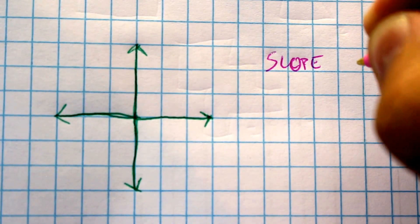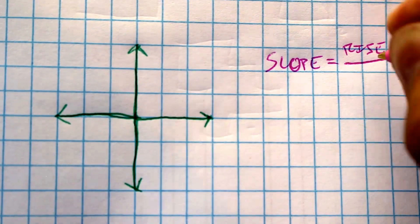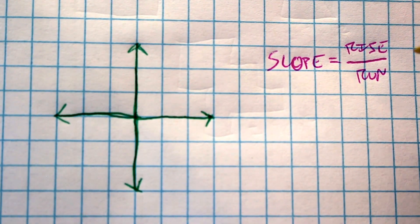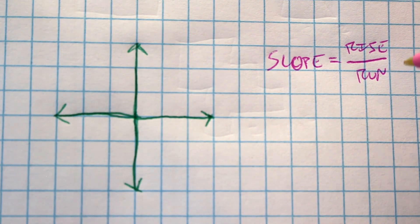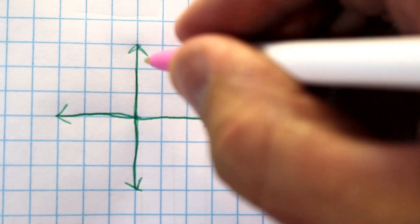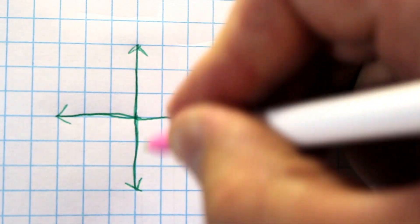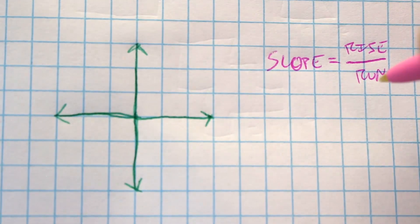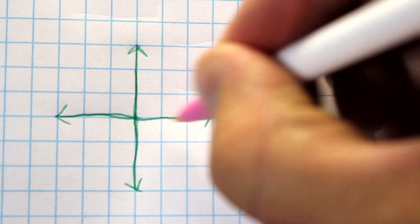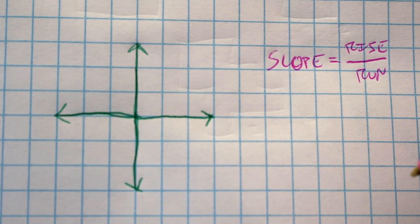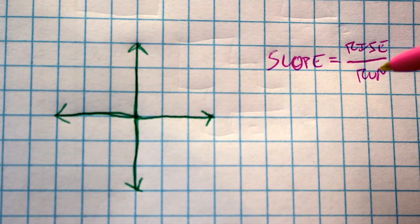So slope equals rise over run. Maybe you've heard this before. What that means is your rise is a change in the y value, so up and down here. That's the rise, because you're rising. Run is coming across on the x value here, a change in the x value. That's because you're running across the graph. So we say that slope equals rise over run.